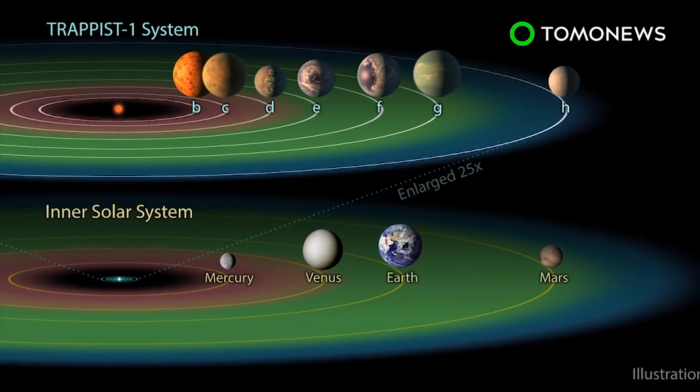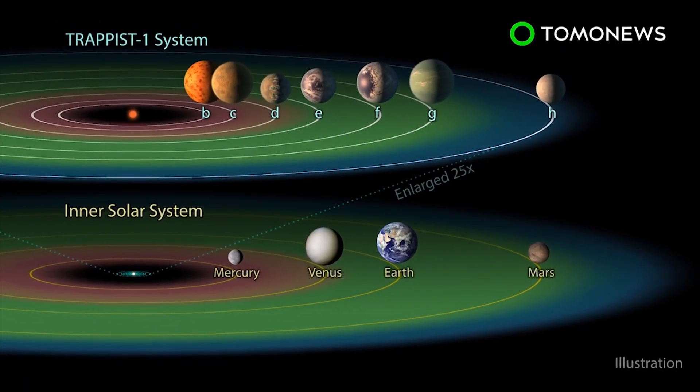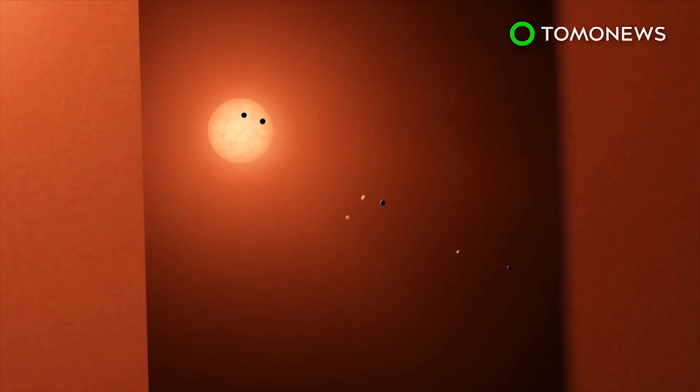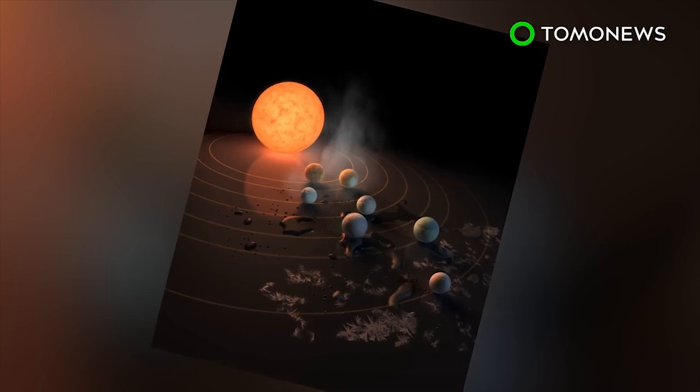The TRAPPIST-1 system is located 235 trillion miles from our solar system, which means if you wanted to catch a flight there, the journey would take about 44 million years. So, still faster than a Spirit Airlines flight.